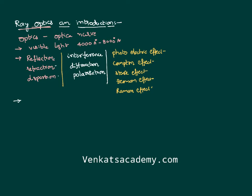First of all: reflection is coming back into the same medium; refraction is going into another medium; dispersion is the splitting up of light. Interference is a combination of two light waves that produce alternating bright and dark spots. Diffraction is the bending of light at an obstacle. Polarization is getting a part of the light and stopping the other part.